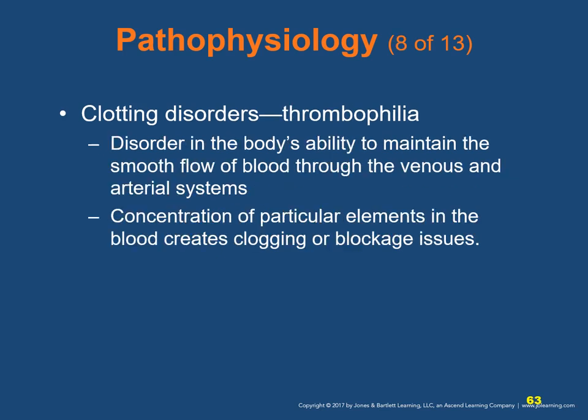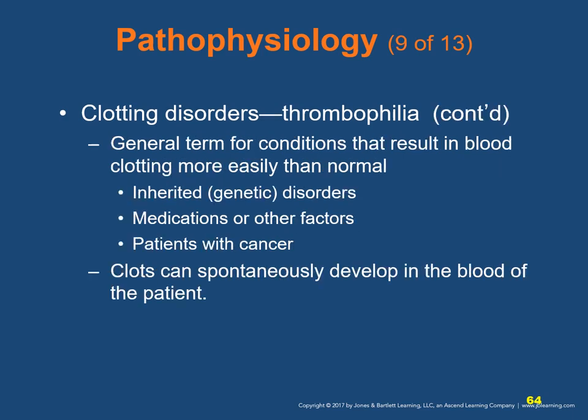Thrombophilia is a disorder in the body's ability to maintain smooth blood flow through the venous and arterial systems, where concentration of particular elements creates clogging or blocking issues. It is a general term for many conditions resulting in blood clotting more easily than normal. It can be an inherited or genetic disorder, requires medication or other management factors, and can occur in patients with cancer. Clots can spontaneously develop in the patient's blood.